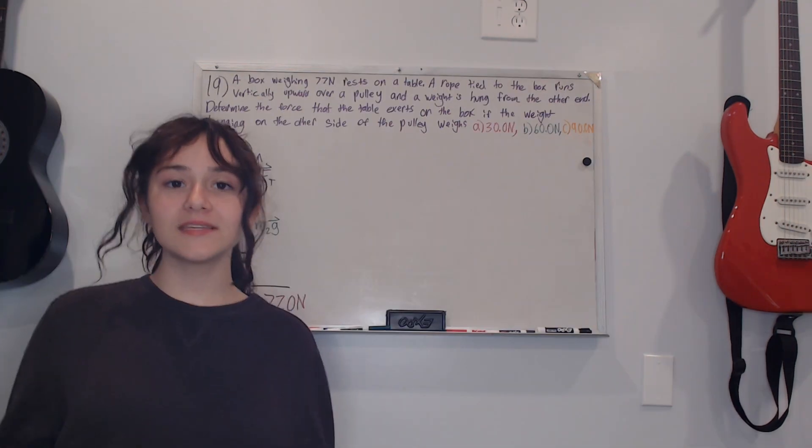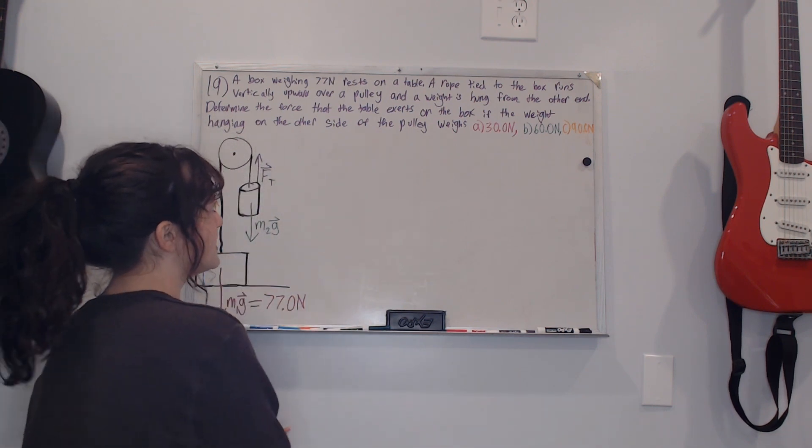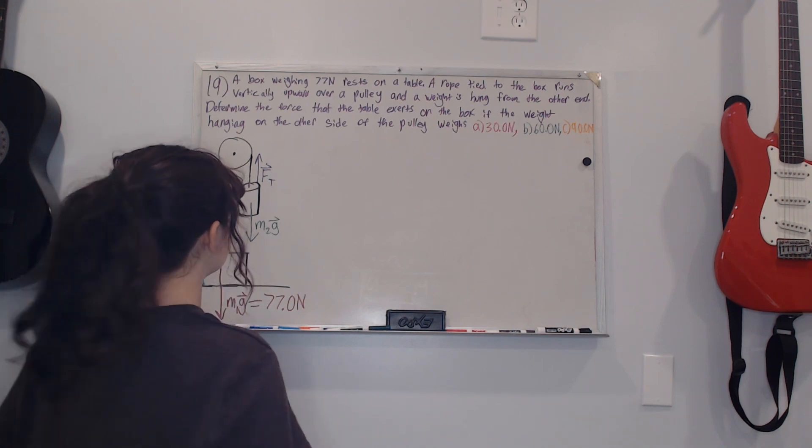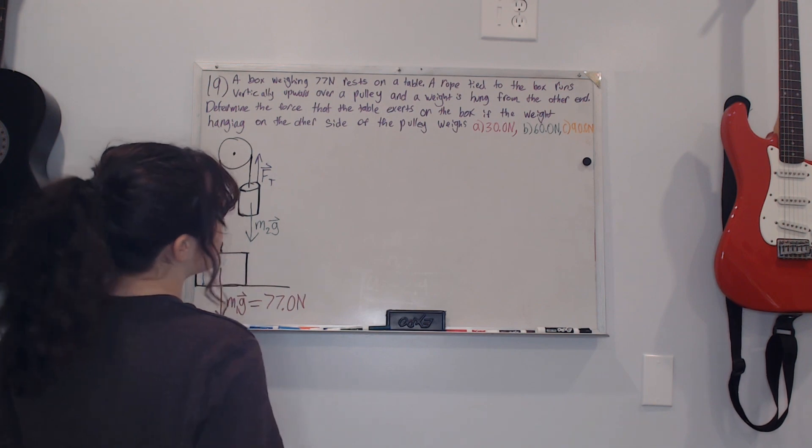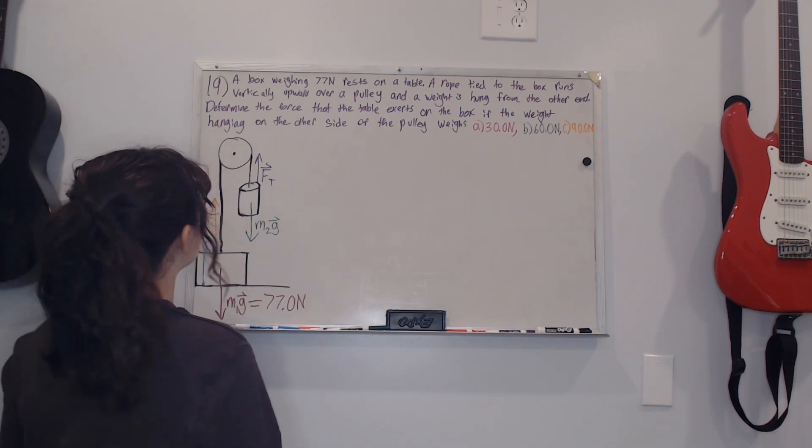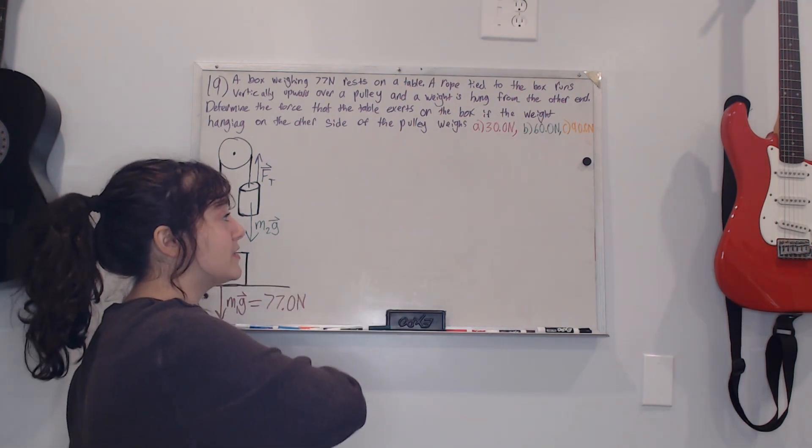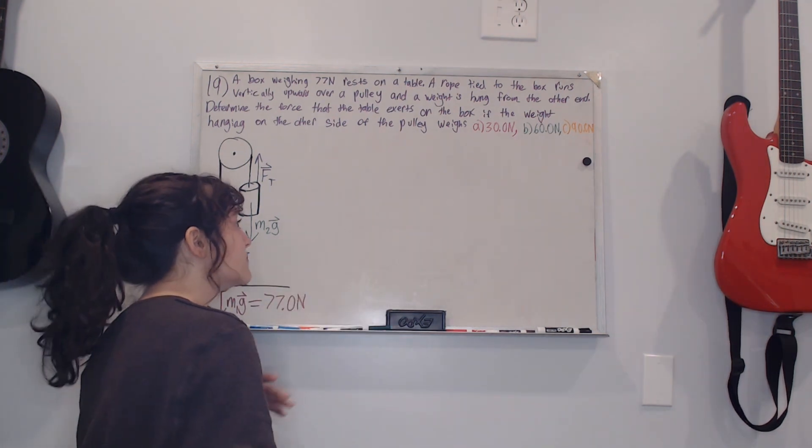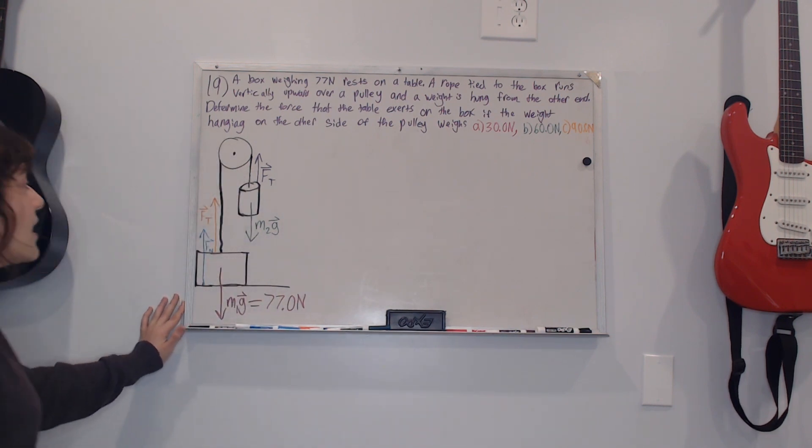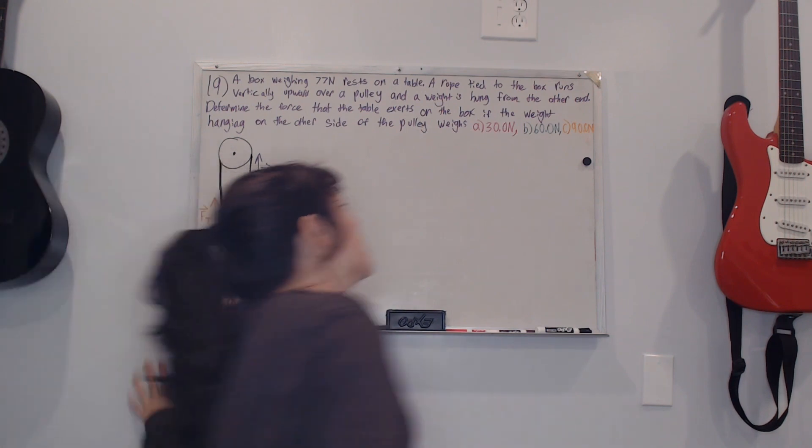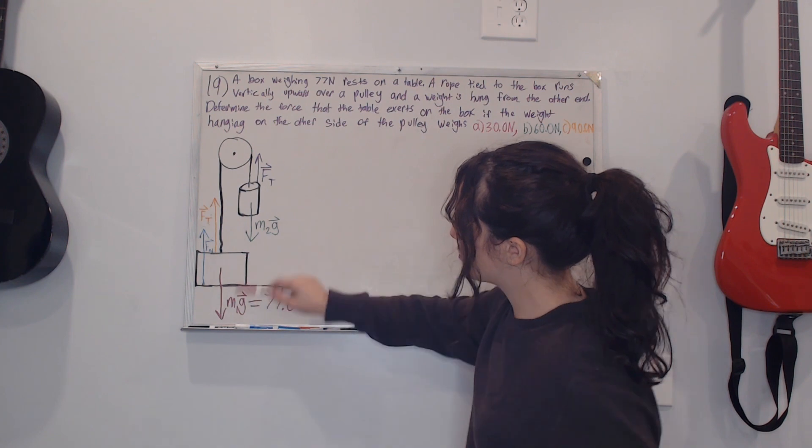This is number 19 in the homework and it says a box weighing 77 newtons rests on a table. A rope tied to the box runs vertically upward over a pulley and a weight is hung from the other end. Determine the force that the table exerts on the box if the weight hanging on the other side of the pulley weighs (a) 30 newtons, (b) 60 newtons, and (c) 90 newtons. I already started off by drawing the free body diagram and I added all the parts like tension, center of mass, the normal force, and the tension of this rope.